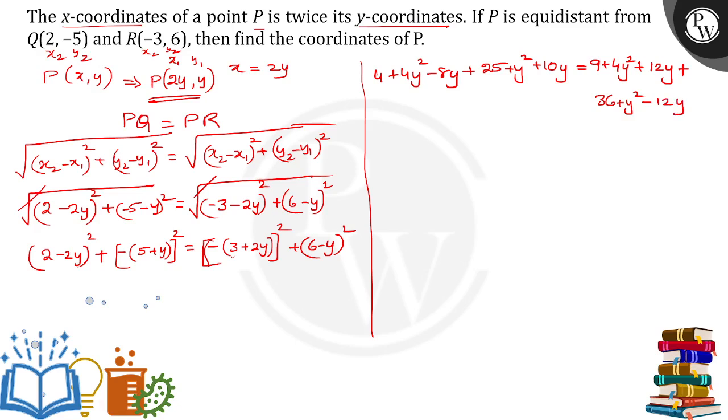Have a look over here, what values we can simplify. 4y² and 4y² cancels, plus 12y minus 12y cancels. We're left with 4 + 25, that is equal to 29, minus 8y plus 10y, that is equal to plus 2y plus y².